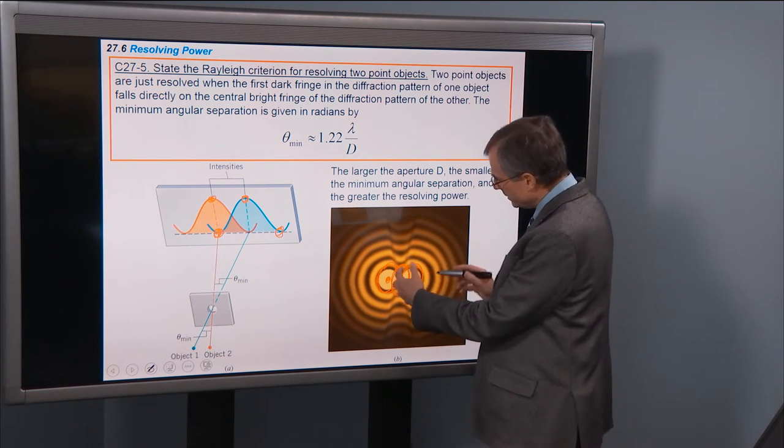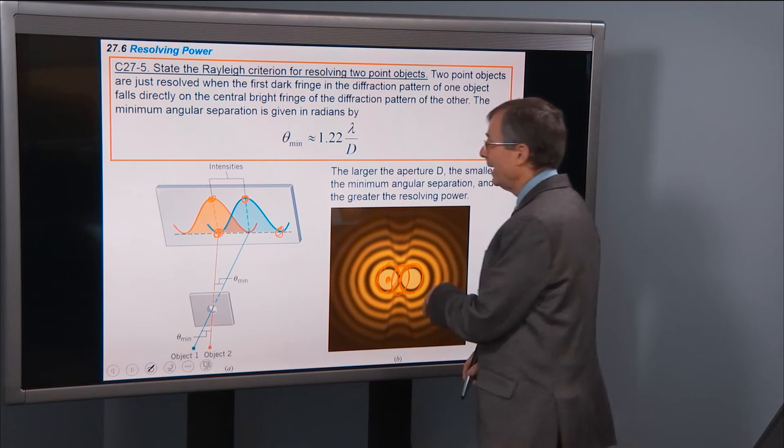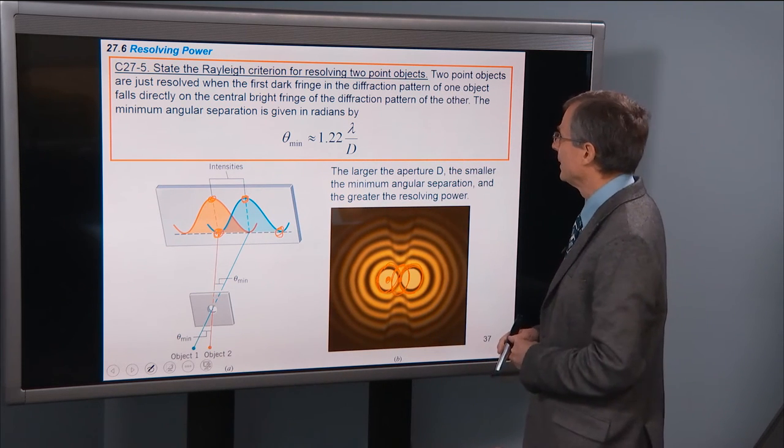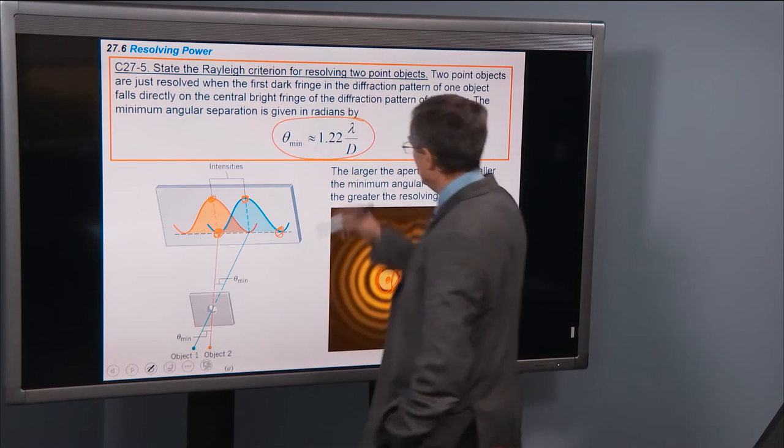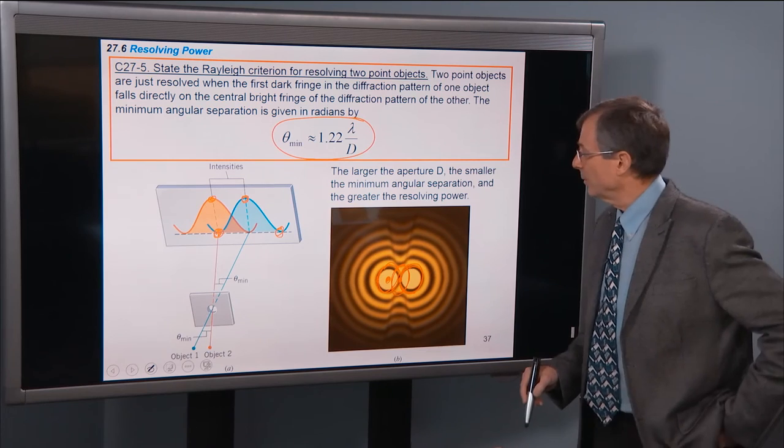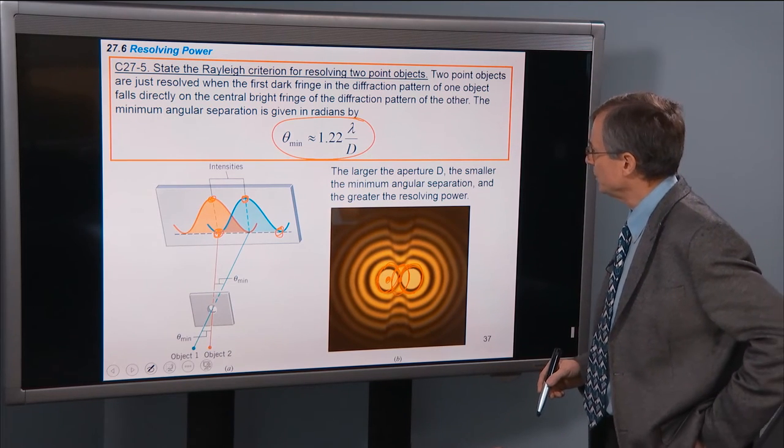But once you get to this overlap position here, you can't tell, your eye can't tell. And that corresponds to, this just comes right straight out of the last concept, theta minimum is 1.22 lambda over d.